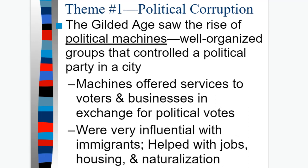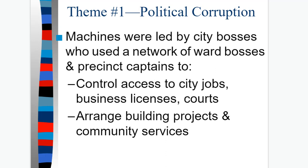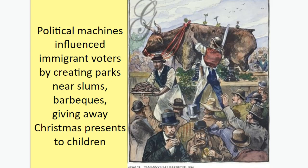The Gilded Age saw a rise of political machines — well-organized groups that controlled a political party in a city. These machines offered services to voters and businesses in exchange for political votes. They were very influential with immigrants, helping with jobs, housing, and especially naturalization into citizenship. These machines were led by city bosses who used a network of ward bosses and precinct captains to control access to city jobs, business licenses, and courts. They arranged building projects and community services, and influenced immigrant voters by creating parks near slums, doing barbecues and giveaways, and giving Christmas presents to children — anything to gain support for that organization.